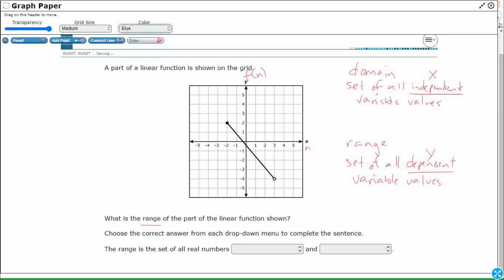So our x values—you notice that our x starts right here at negative two. Now, it's going to go up here to three. So I'm looking side to side for my domain.